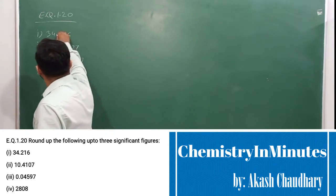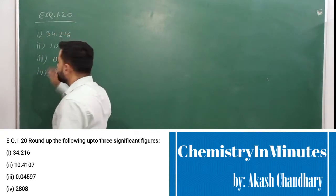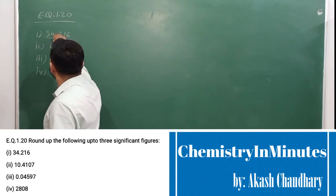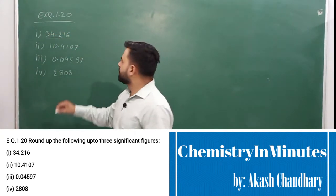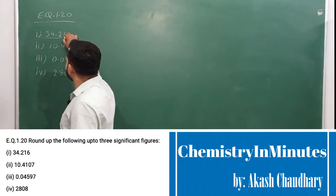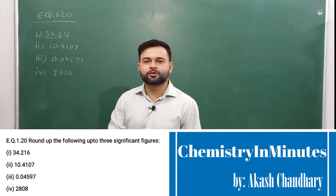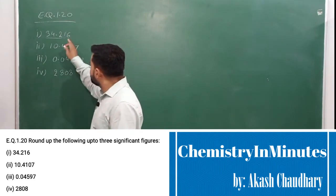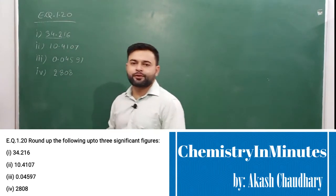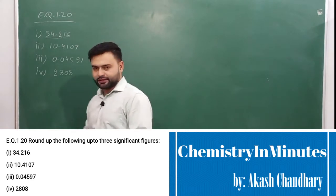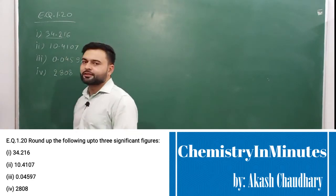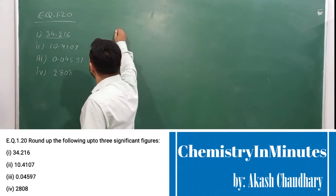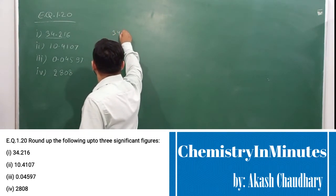First number is 34.216. In this number, 3 significant digits will be at this 34.2. The last number to be dropped or the first number to be dropped is 1. Now, this 1 is less than 5, so the digits are dropped and the preceding digit remains unchanged. The rounded up number will be 34.2.